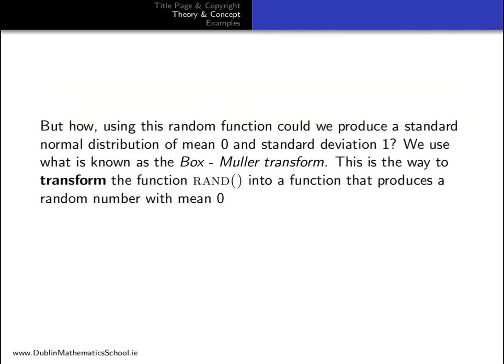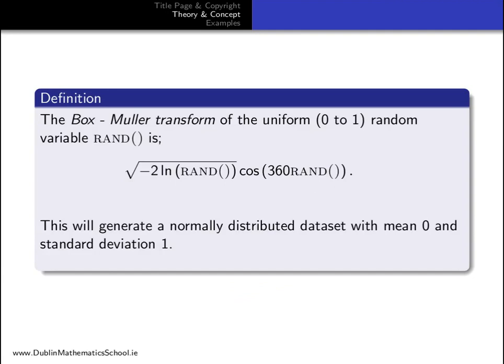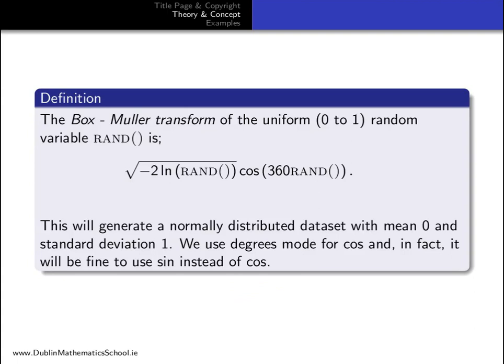This is the way to transform the function rand into a function that produces a random number with mean 0 and standard deviation 1, normally distributed. The Box-Muller transform of the uniform random variable rand is square root minus 2 log rand cos 360 rand. This will generate a normally distributed data set with mean 0 and standard deviation 1. We use degrees mode for cos and, in fact, it will be fine to use sine instead of cos if we so choose.